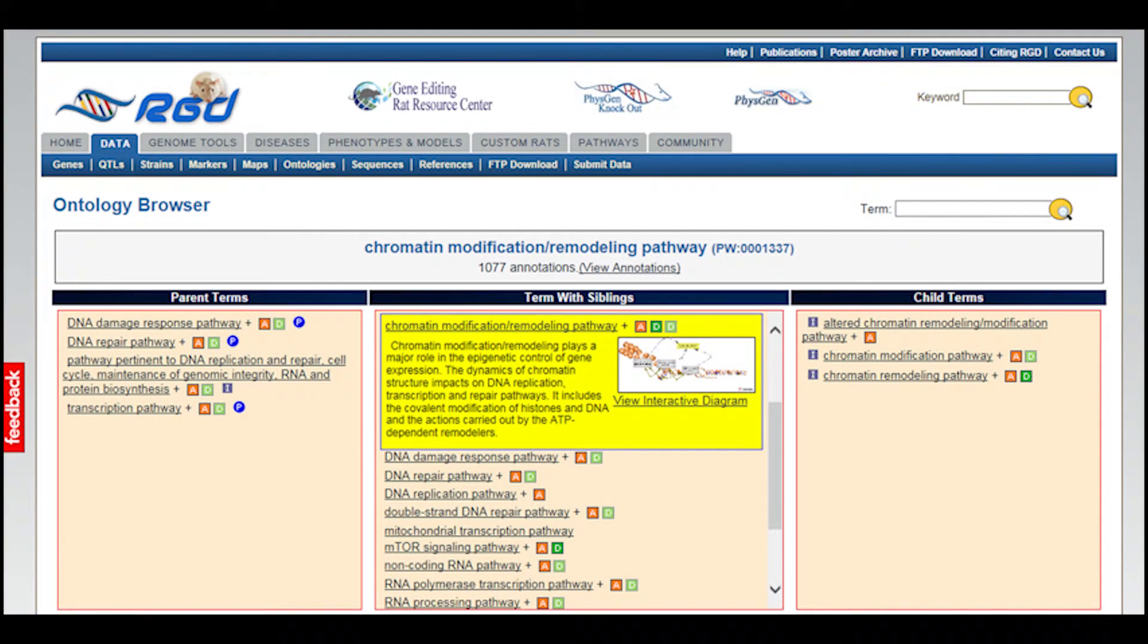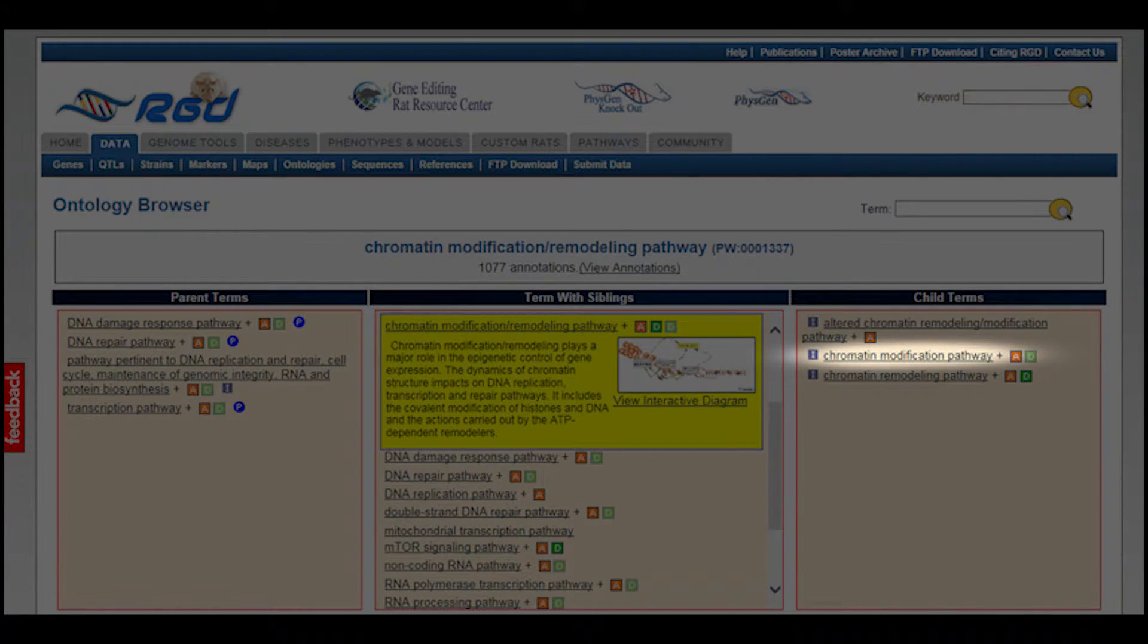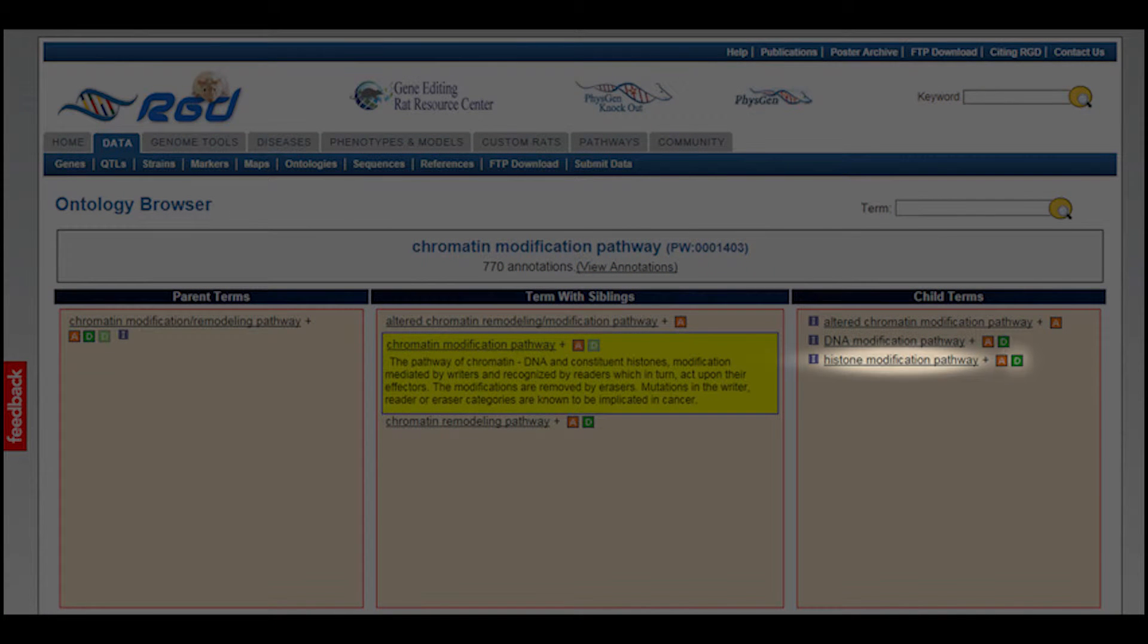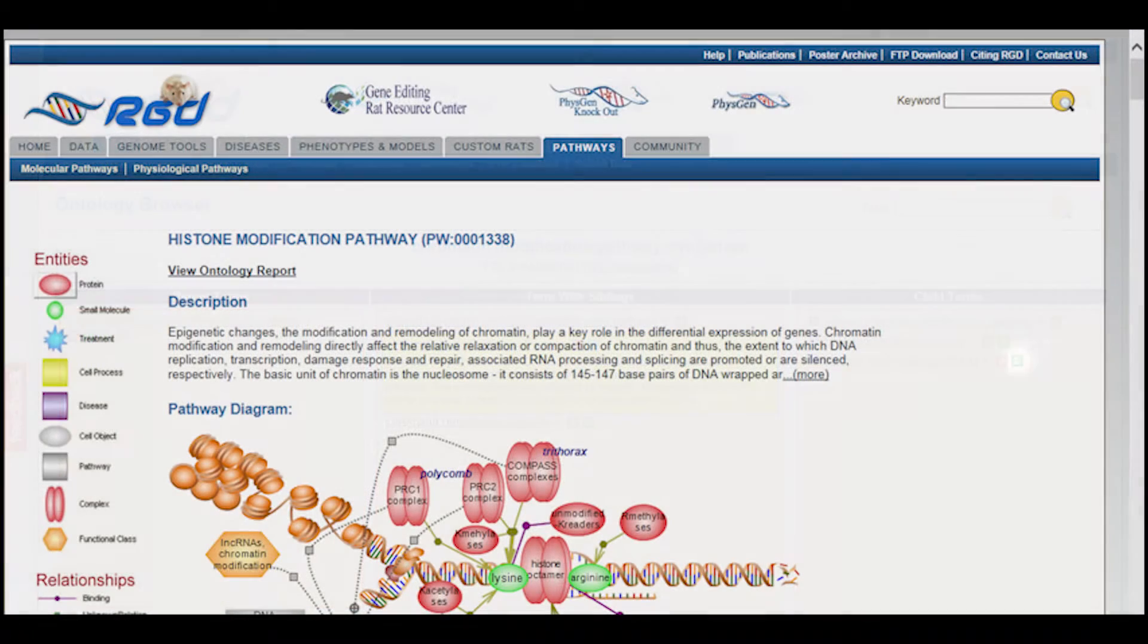If you then click on the child term chromatin modification pathway with the light color D next to it, you will see its child term, histone modification pathway. Click on the dark color D next to that term. On the resulting page, you should see the diagram for the term histone modification pathway.